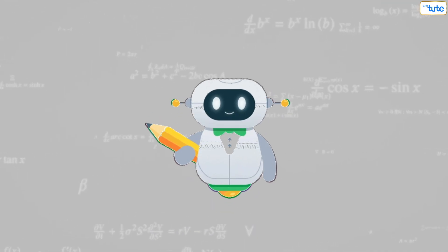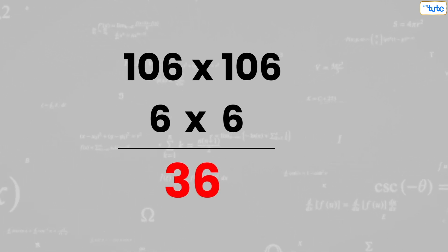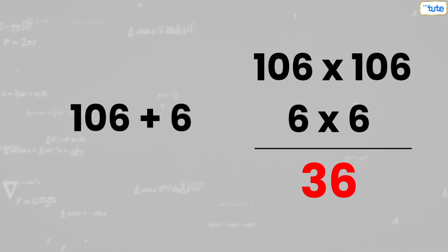For example, if you have to calculate 106 times 106, then you should first multiply the last digits of both the numbers, that is 6 times 6. The answer is 36, that will be the end digits of the answer. Then you should add 106 plus 6. The answer is 11236.